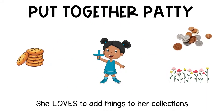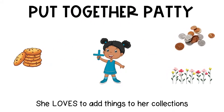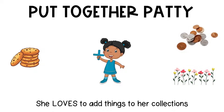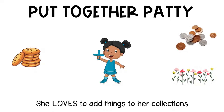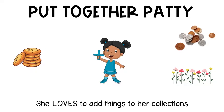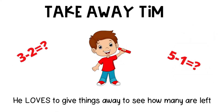Before we begin, let me introduce you to two of my friends. This is Put Together Patty. She loves getting more things to add to her collections. Patty will help us today when we are adding. This is my friend Takeaway Tim. He loves to give things away to see how many are left over. Tim will help us to remember when we need to take one number away from the other, or subtract.